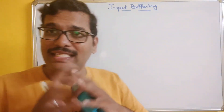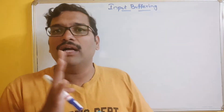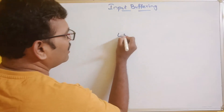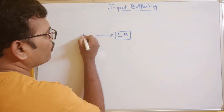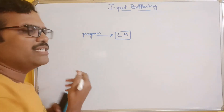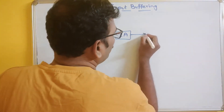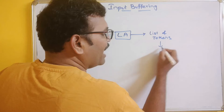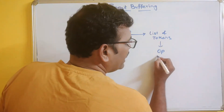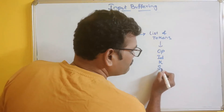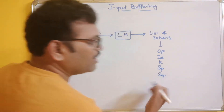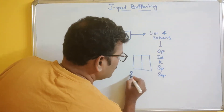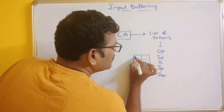Coming to the first phase, that is the lexical analyzer — we have seen the role of the lexical analyzer, which is the first phase of a compiler. A lexical analyzer takes the program as input and produces a list of tokens. These tokens can be categorized as operators, identifiers, keywords, special symbols, separators, etc. This information will be maintained in a symbol table.